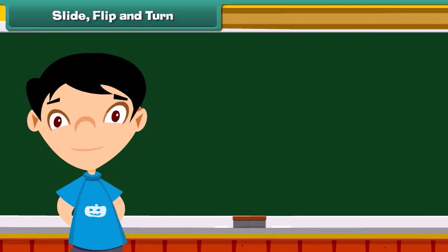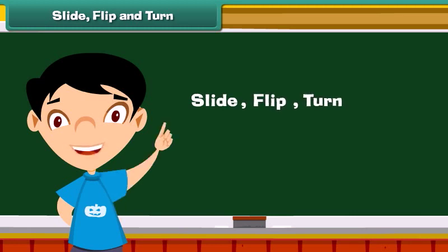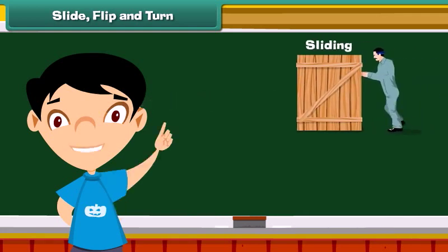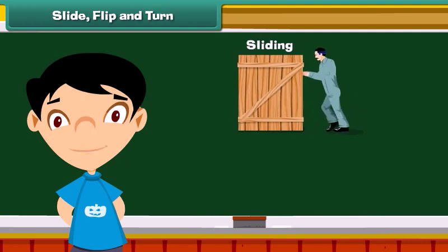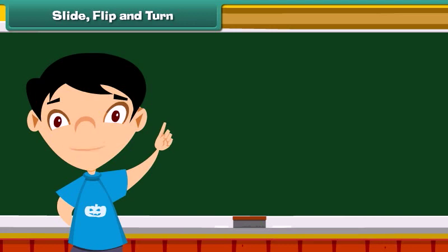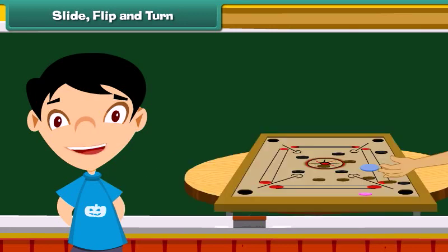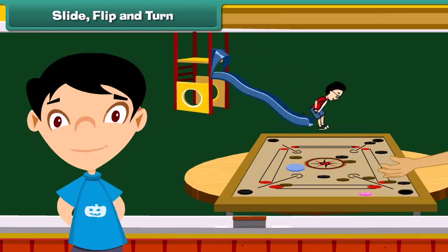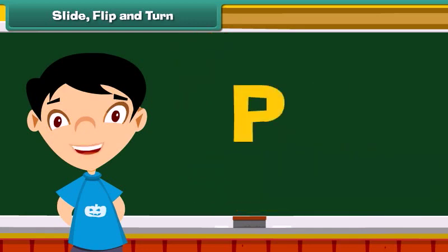You must have come across the words slide, flip, and turn many times in your life. Let us see what they mean in mathematics. Moving an object smoothly along a surface without disturbing its shape and size is called sliding. We observe sliding in real life while playing carrom — we move the carrom coins by hitting them with a striker. Children also enjoy themselves at slides.